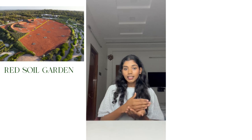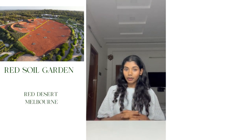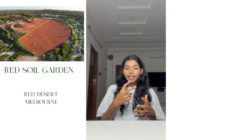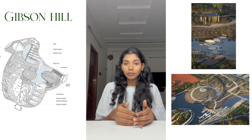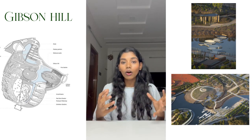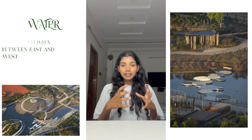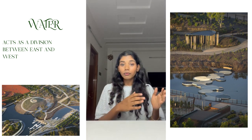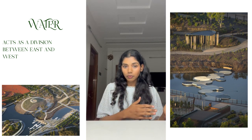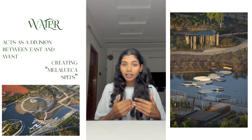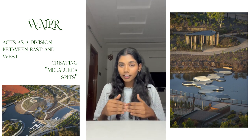Let's discuss the focus points in this project. The first is a red soil garden, said to be inspired by the red desert in Melbourne, creating a strong visual focus. The second is Gibson Hill, a man-made hill with a rock pathway leading to its top, providing a full view of the botanical garden. Third, we have water — not as a central pivot, but as a division between the east and west sides. To cross from the east side to the west side, one must cross over this water, which creates mounded pits and rock pool walkways leading to different themed gardens in between.